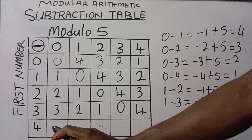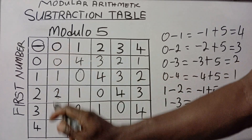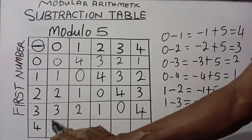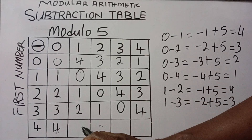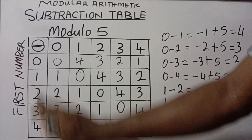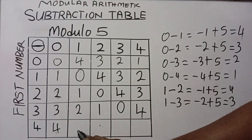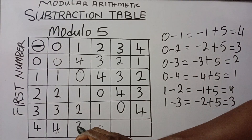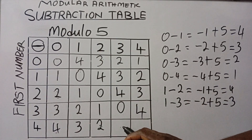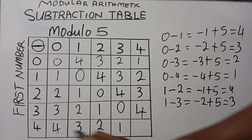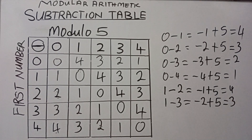So to fill in the remaining part, 4 minus 0 will give us 4. Then 4 minus 1 will give us 3. Then 4 minus 2 will give us 2. Then 4 minus 3 will give us 1. Then 4 minus 4 will give us 0. So this is how to perform the operation of subtraction in modular arithmetic.